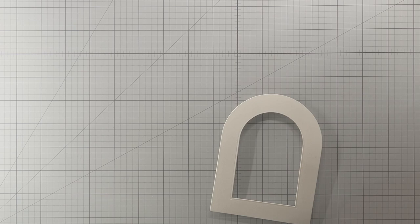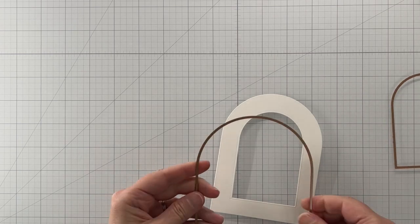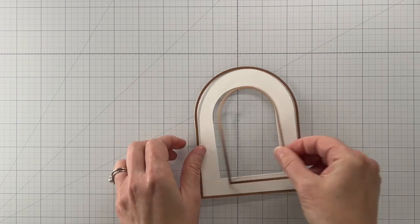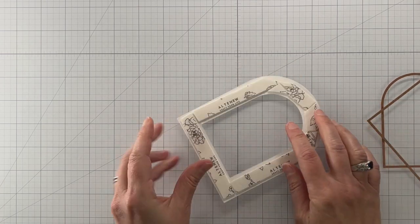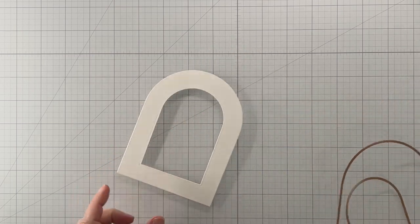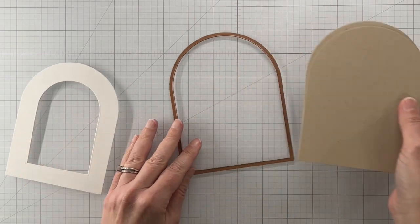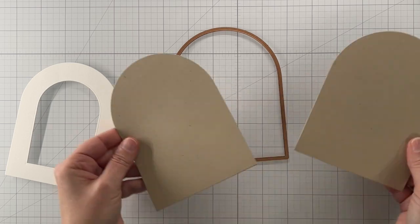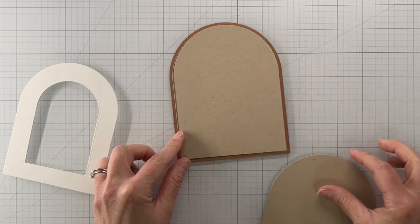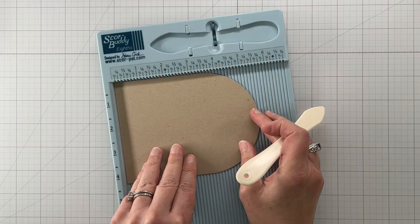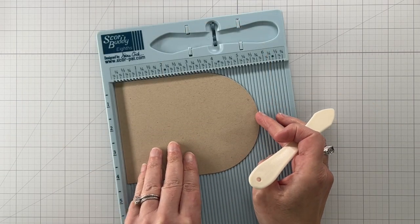So we're making our card today with the essential arches set and I just took two arches to make this little frame and then I put foam tape on the back so that's how I made the window. And then I took the largest arch and I cut it twice out of craft cardstock and this is how we're going to make our card base.